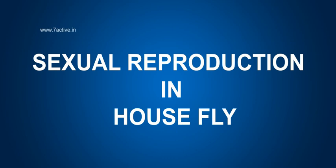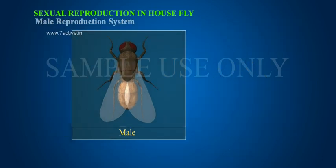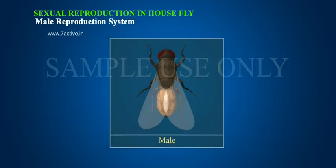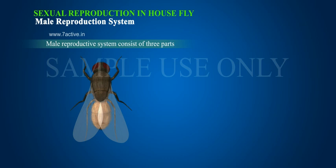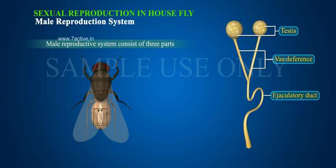Sexual Reproduction in Housefly. In housefly, separate male and female organisms are present. The Male Reproductive System consists of three parts: 1. Testes, 2. Vas Deferens, 3. Ejaculatory Duct.